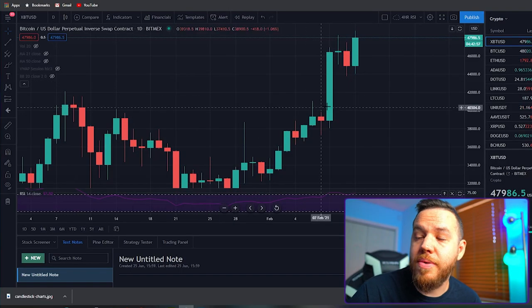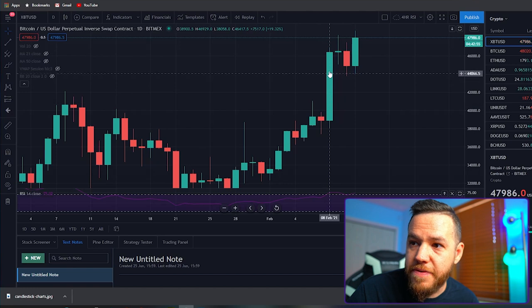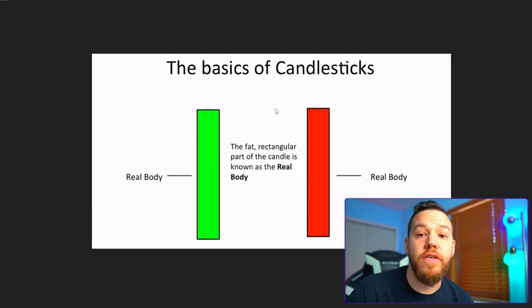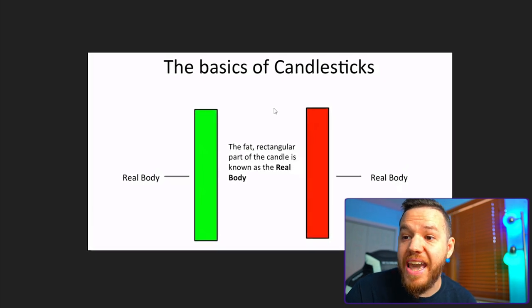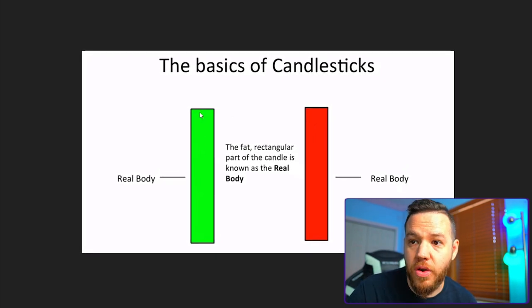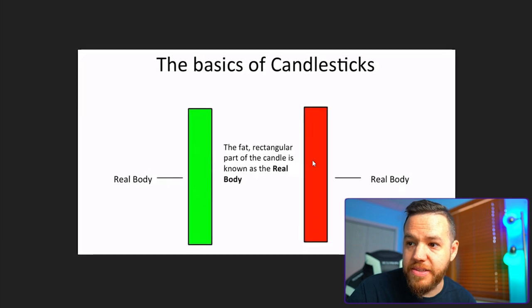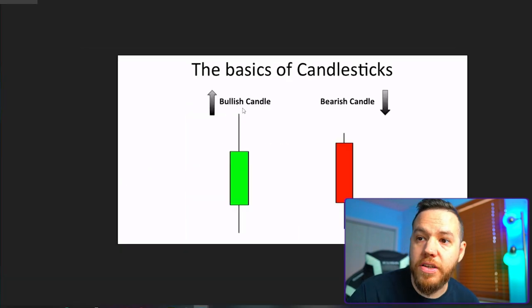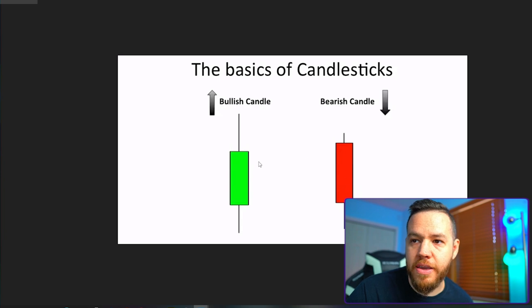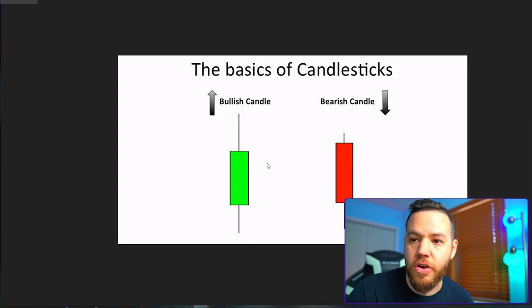The next thing you're probably wondering is: why are some of these candles fat and why are some skinny with a little stick? The fat rectangular part of the candle is known as the real body. Regardless of how long the little sticks are on either end, this is still the real body. It doesn't matter what color it is — green or red — they are all still the real bodies.